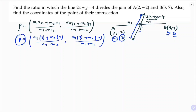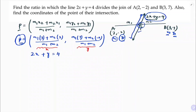Now I will substitute the point P into the equation of the line. Since P lies on this line, we use 2x plus y equals 4. The first value is x and the second value is y.